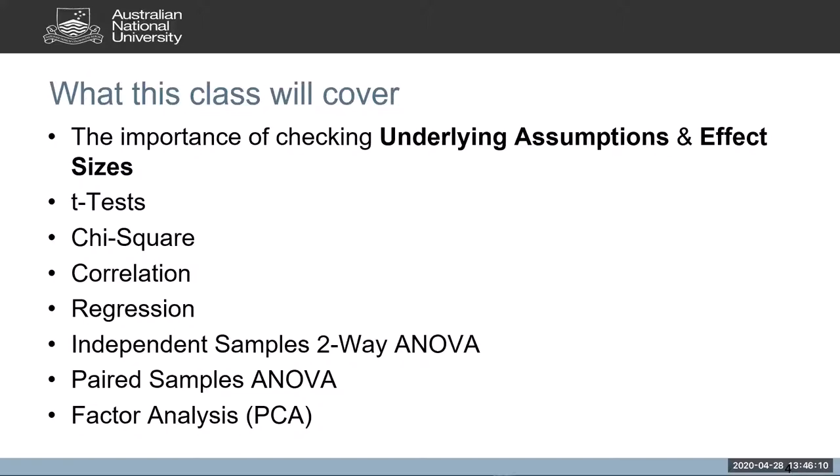This class will cover the importance of checking the underlying assumptions and effect sizes for each test that we conduct. We will also look at t-tests, chi-square analysis, correlation, multiple linear regression, independent samples two-way analysis of variance, a paired samples analysis of variance, as well as a factor analysis using principal components analysis.